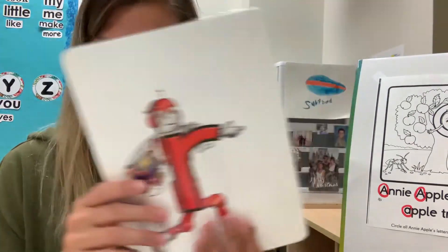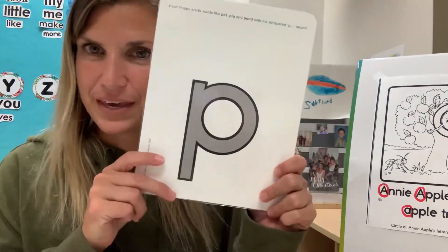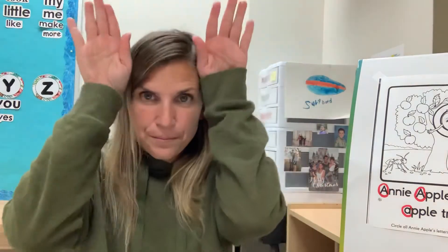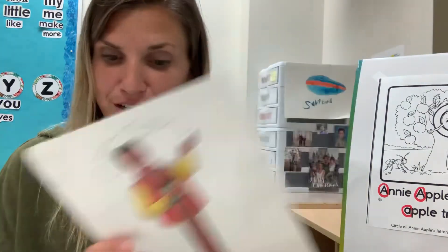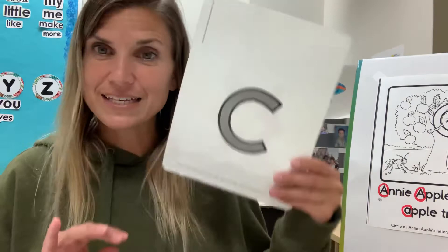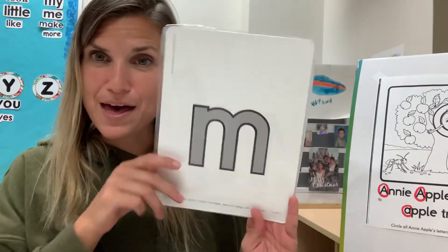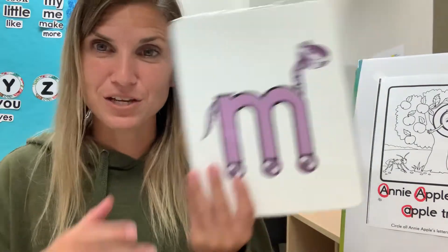R, r, r — red robot. P, p — Peter Puppy. B — bouncy Ben. J, j, j, j — jumping gym. C, c, c — clever cat. M, m — munching Mike.